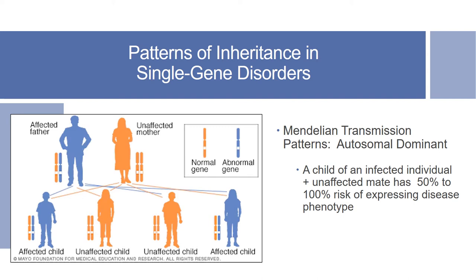Autosomal dominant disorders involve a mutated gene that is dominant on an autosomal chromosome. A child of an affected individual and an unaffected mate will have a 50% chance of expressing the disease phenotype and a 50% chance of being unaffected. If a trait is dominant, even one abnormal gene will result in the child being affected.